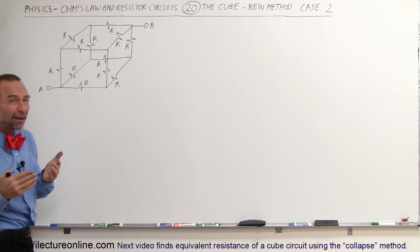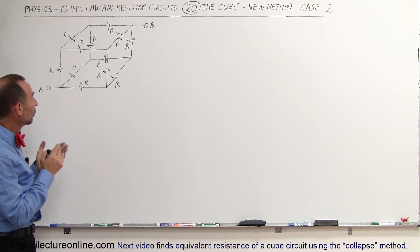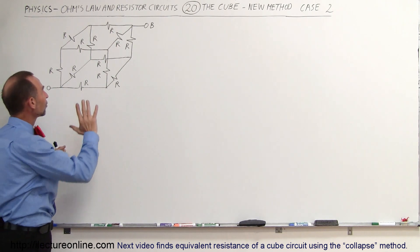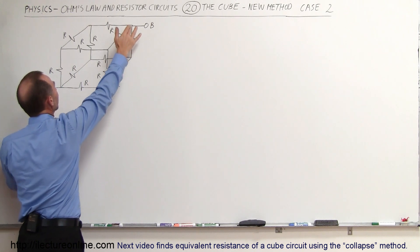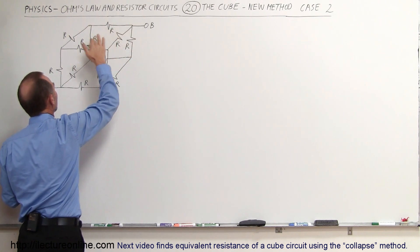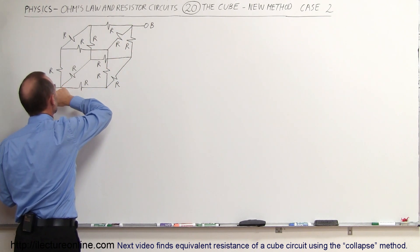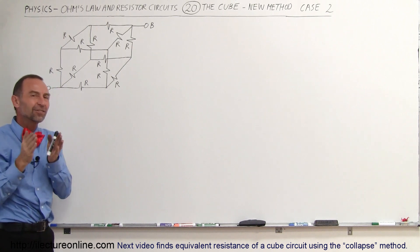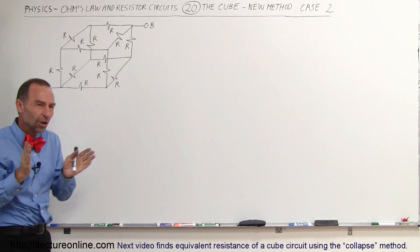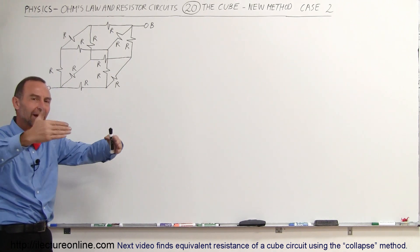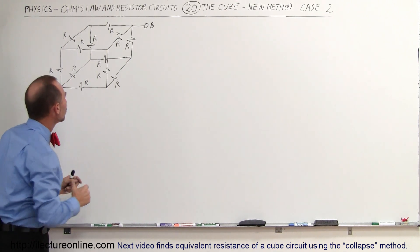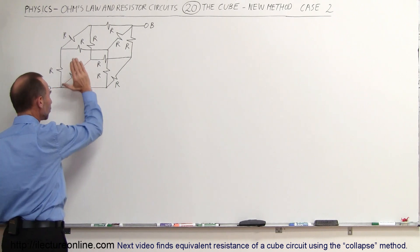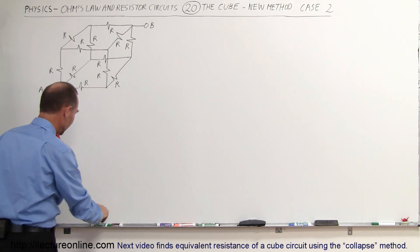We have to recognize the symmetry here, which means we can actually collapse the circuit. Basically from this perspective going this way, or from this perspective going this way, this is a perfectly symmetric circuit along the two opposite sides of the cube, which means we can actually collapse the cube into a flat circuit.